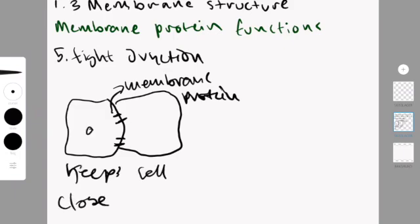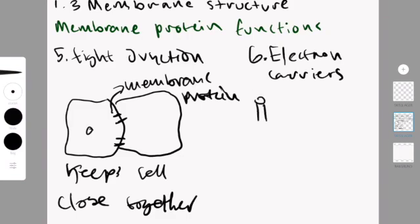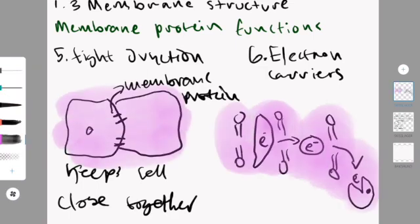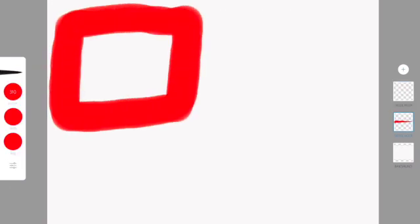The fifth function is called tight junctions. Essentially you have this membrane protein that keeps the cells close together. The last function discussed in this chapter is the electron carrier. Essentially, an electron can be moved from protein to protein until it gets to where it needs to go.